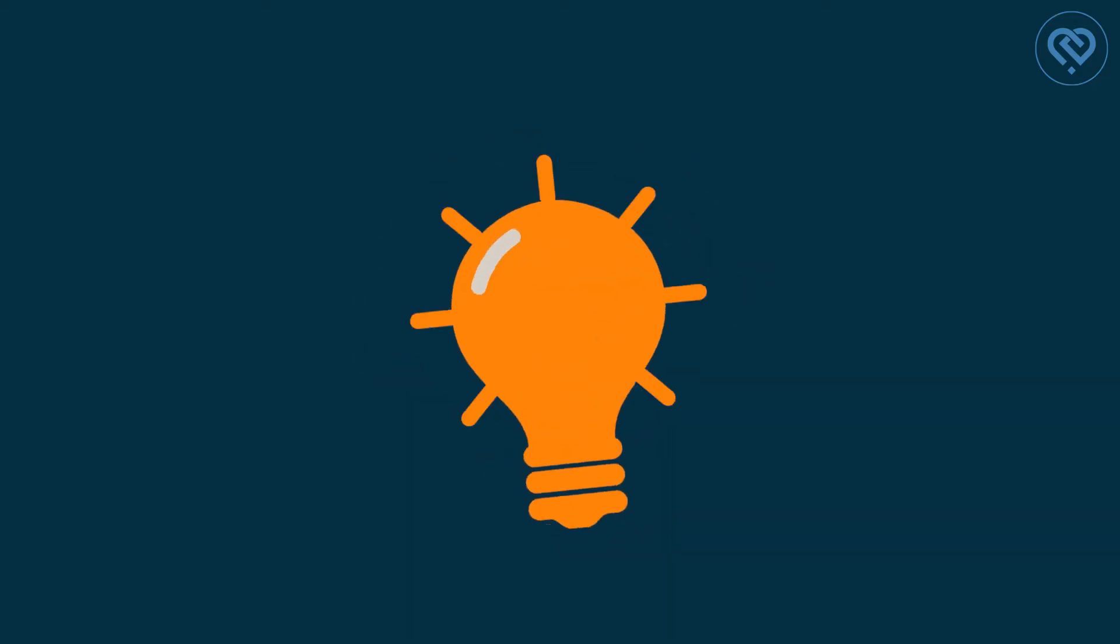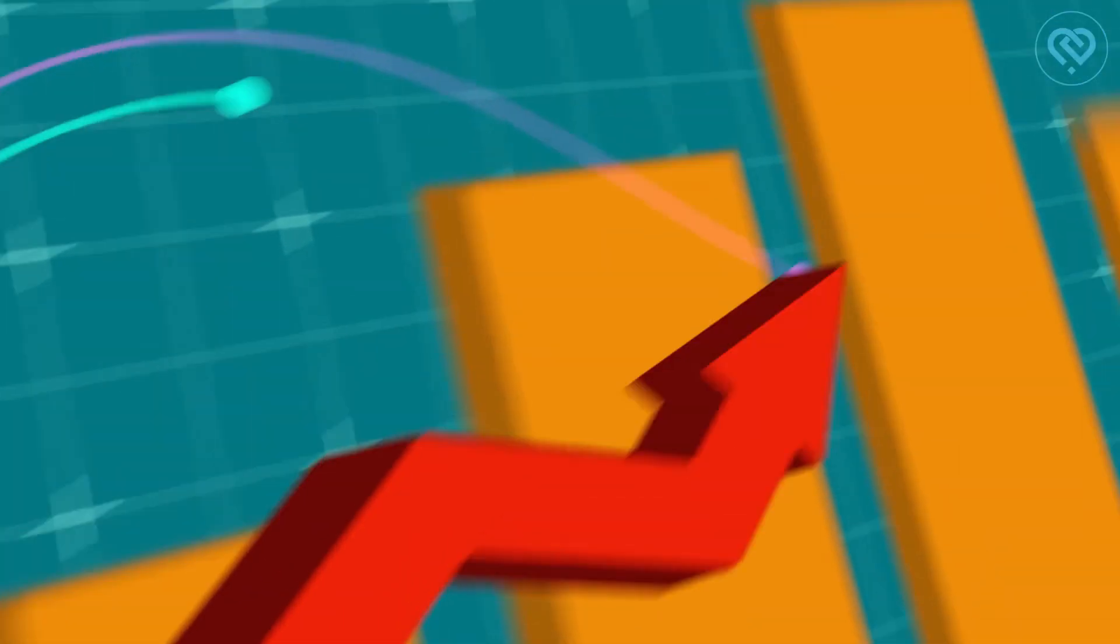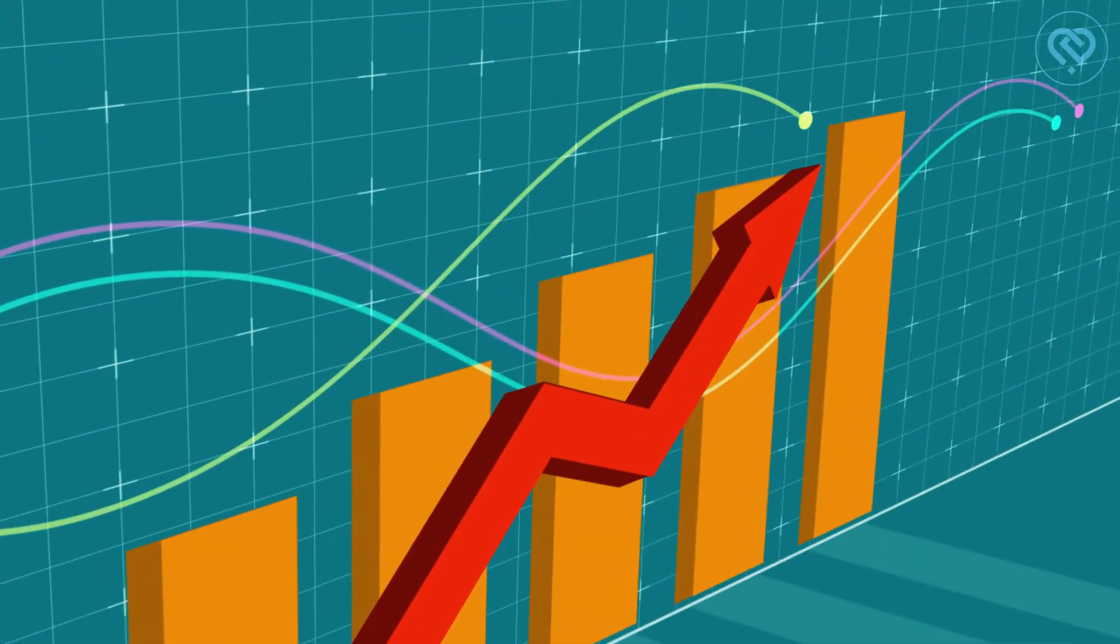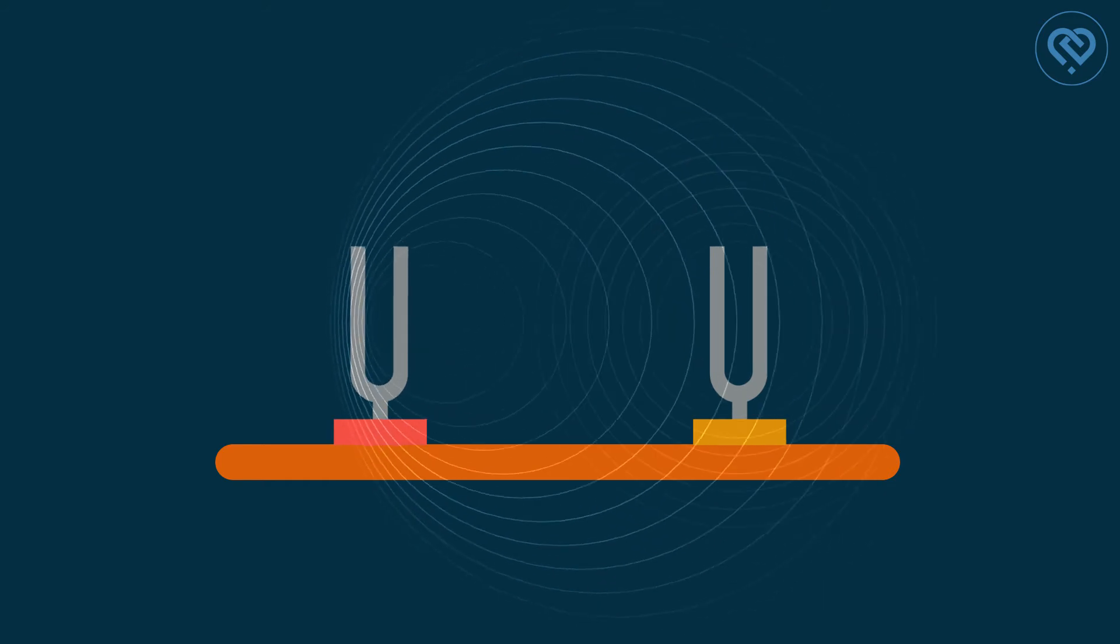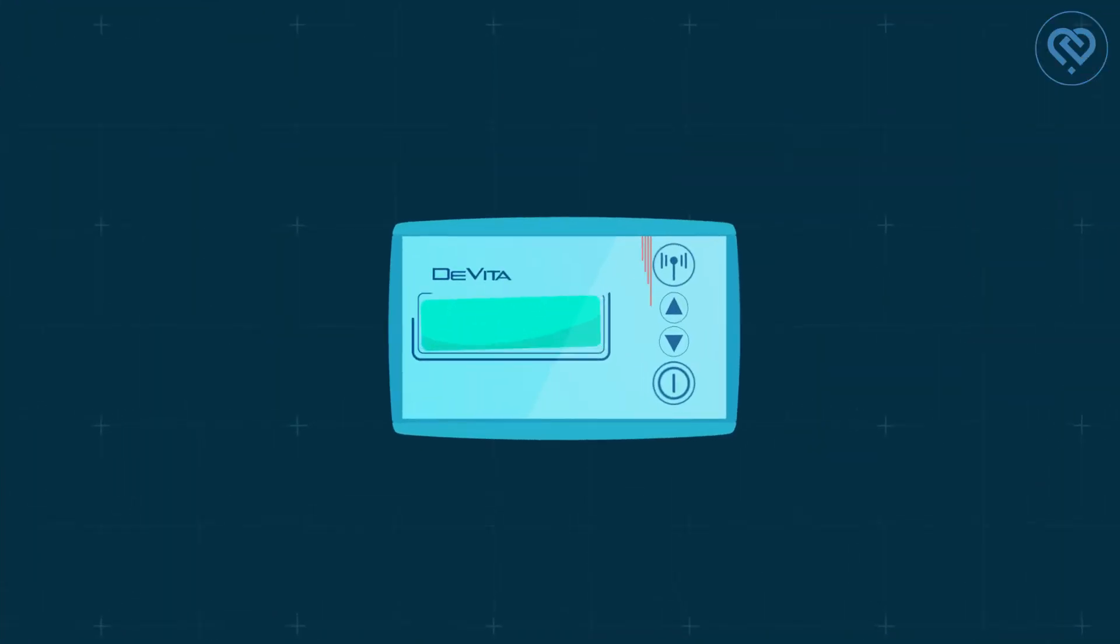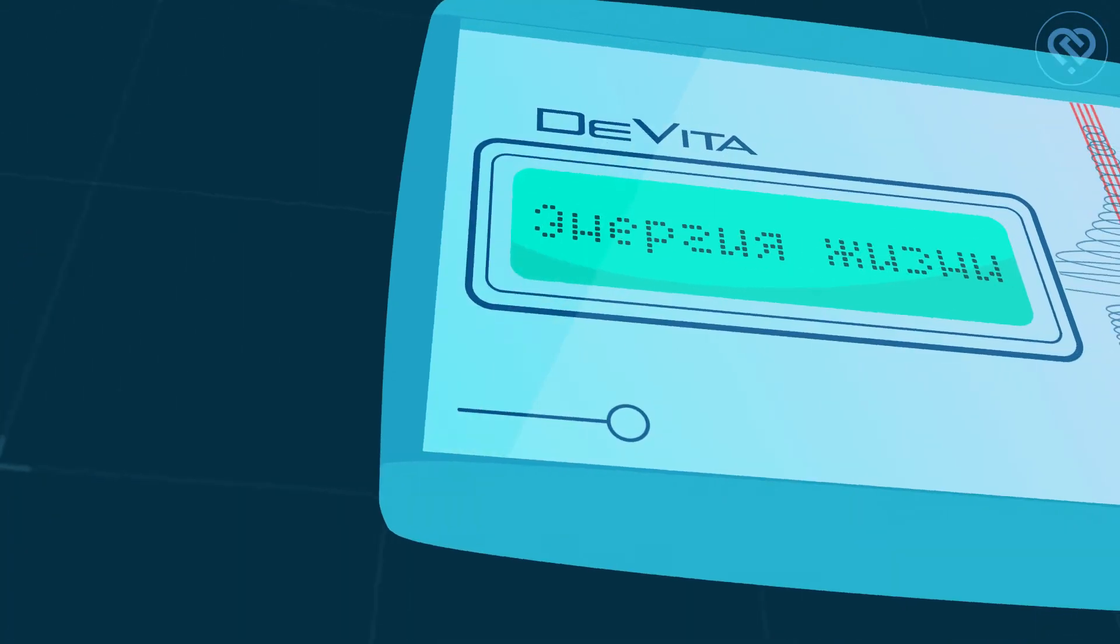A simple solution for improving the functional activity of your cardiovascular system is bioresonance technology used by DaVita devices. You can notice the first results after just a few uses of the device.